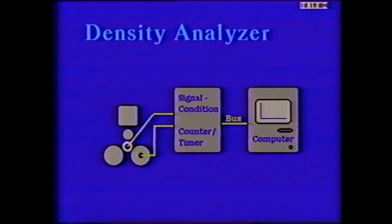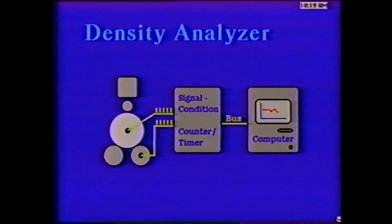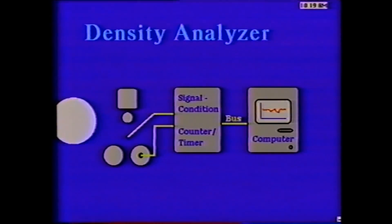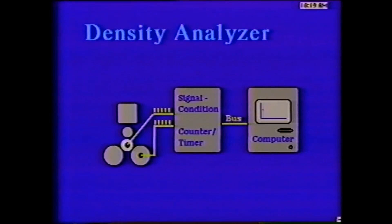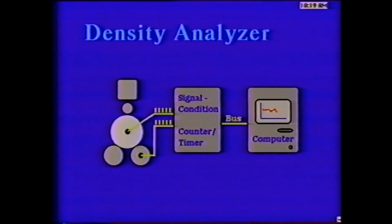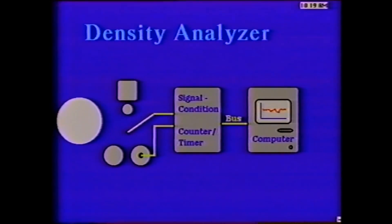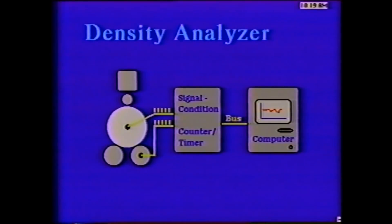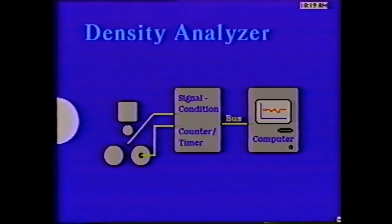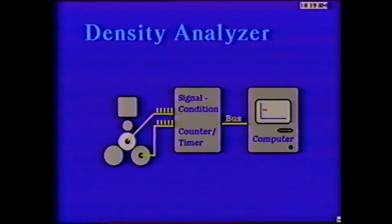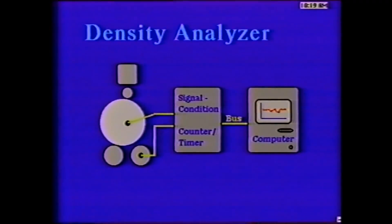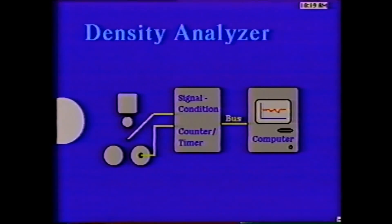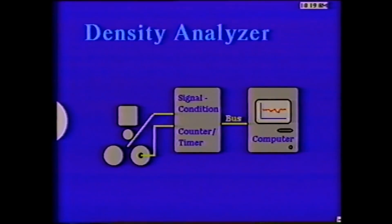The density analyzer is a recent innovation in roll structure measurement. This computer-based instrument has at least two encoders attached to the core and a roller or drum which travels at web speed. The pulse output from these encoders is counted by counter boards which interface to a computer, and the counts are used to calculate the density of the outer layers during winding or unwinding. Any sufficiently large increase in winding tension or stress will result in increased density readings. The density analyzer is one of the truly modern and automated test methods for roll structure analysis.